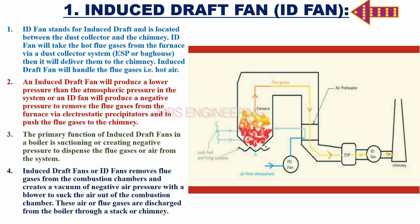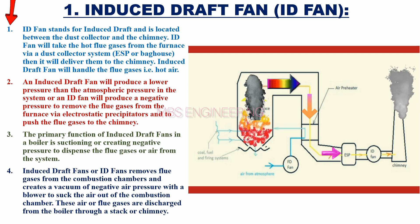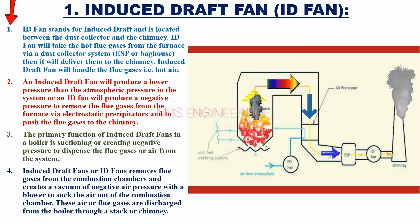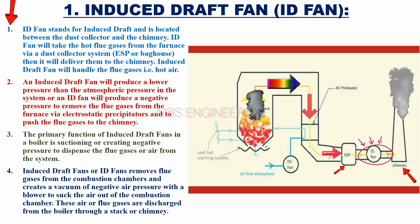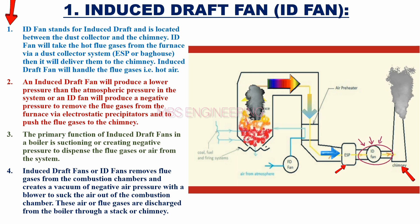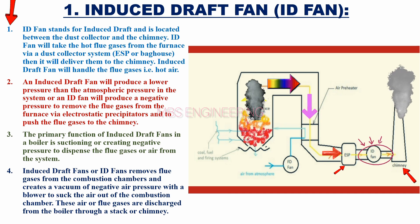The ID Fan stands for Induced Draft and is located between the dust collector and the chimney. The ID Fan will take the hot flue gases from the furnace via a dust collector system, ESP or bag house, then it will deliver them to the chimney.